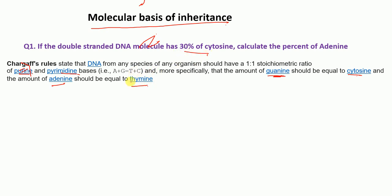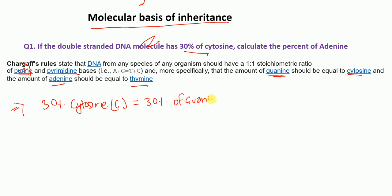We have been given 30 percent cytosine. According to Chargaff's rule, the amount of guanine should equal the amount of cytosine, so we also have 30 percent guanine. Therefore, the total amount of cytosine plus guanine is 30 percent plus 30 percent, which equals 60 percent.